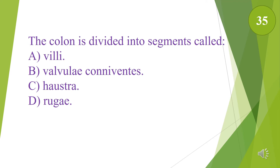The colon is divided into segments called: A. Villi. B. Valvulae conniventes. C. Haustra. D. Rugae. The answer is C, haustra.